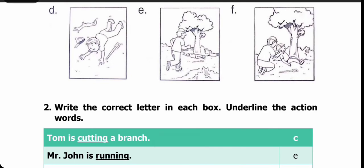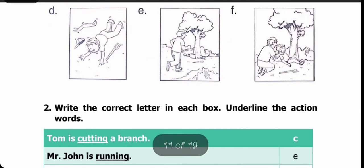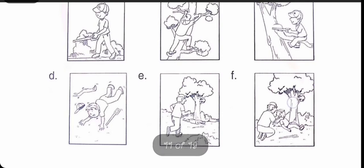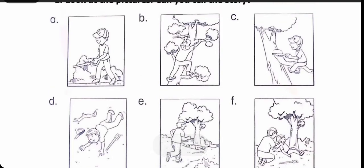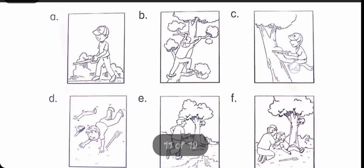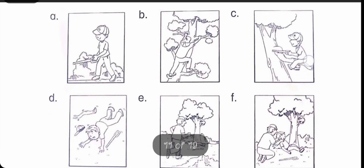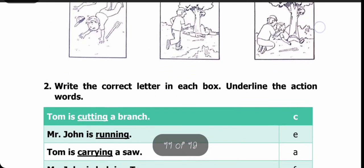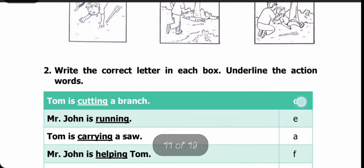Jaise 'Tom is cutting a branch.' Look at the pictures — there is Tom. Tom jahaan pe branch ko cut karta hai, wo picture hum dekhte hain. C picture hai — ismein Tom jo hai wo branch ko cut kar raha hai. To yahaan pe hum C write kar denge.